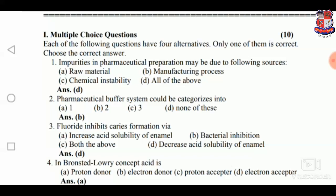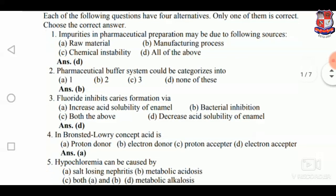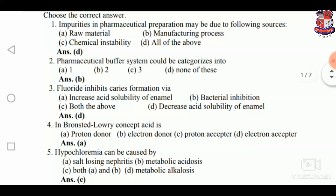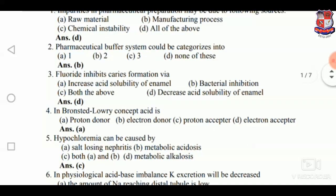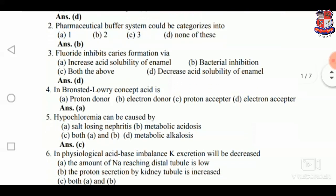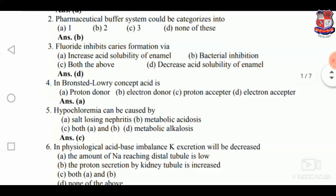The first question: impurities in pharmaceutical preparation may be due to the following sources — these are the four options, and the answer will be D. Pharmaceutical buffer system could be categorized into B, that is 2. Fluoride inhibits caries formation via D, that is decreased acid solubility of enamel.